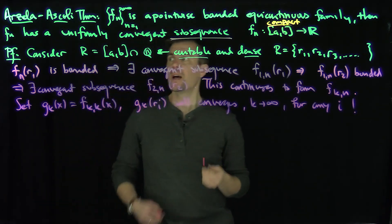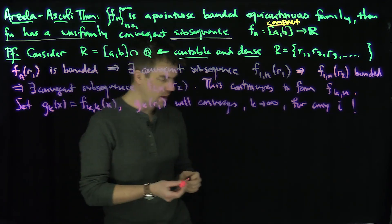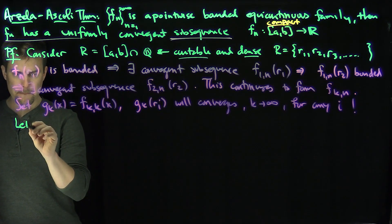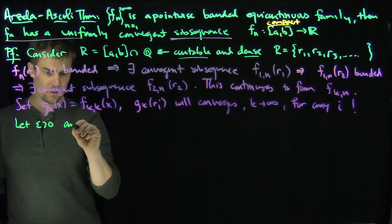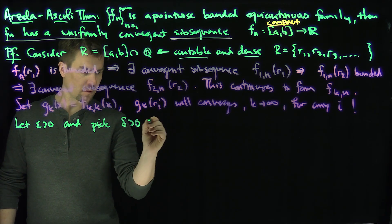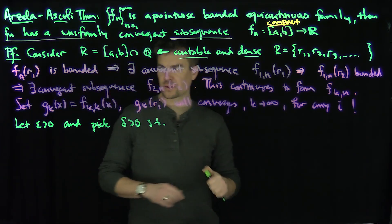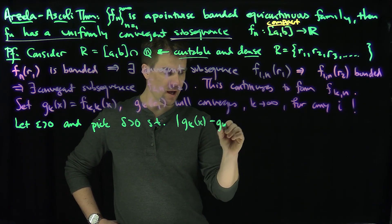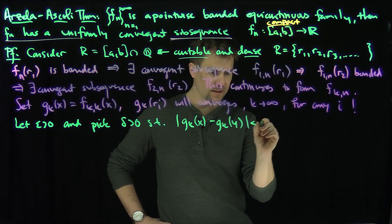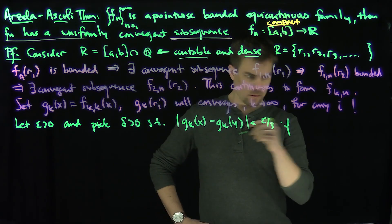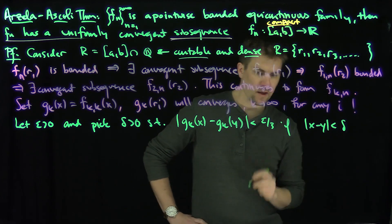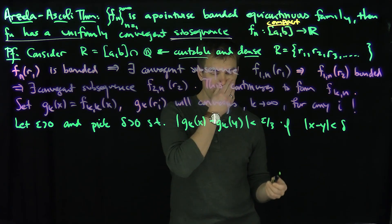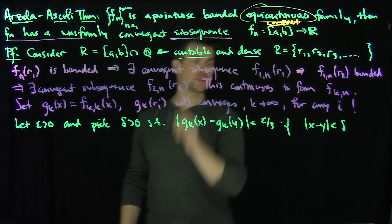So this Gk is a subsequence — I claim this Gk is the subsequence that we want; that's our claim. I have my candidate, and now we're going to work with it. Let epsilon be greater than zero, and pick delta such that |Gk(x) - Gk(y)| is less than epsilon over 3 whenever |x - y| is less than delta. I can do this because Gk is a subsequence of an equicontinuous family, so a subset of an equicontinuous family is also equicontinuous. So the equicontinuity allows me to do this.